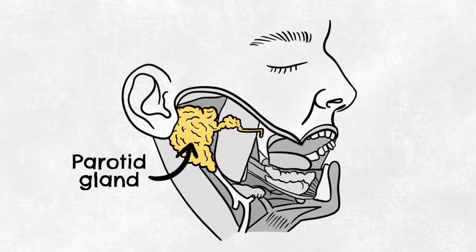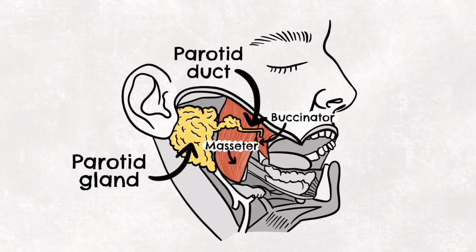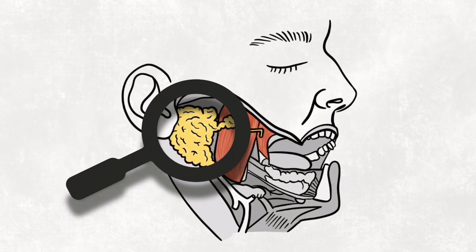The saliva is carried by the parotid duct, which arises from the anterior surface of the gland, traversing the masseter muscle. Then it pierces the bucinator, moving medially and opening into the oral cavity near the second upper molar.